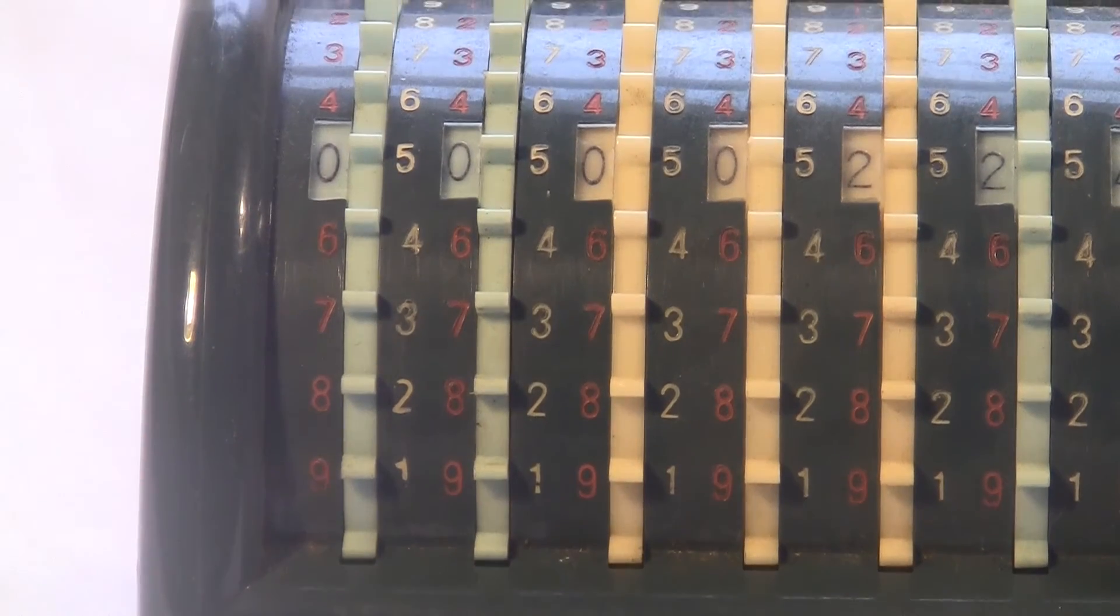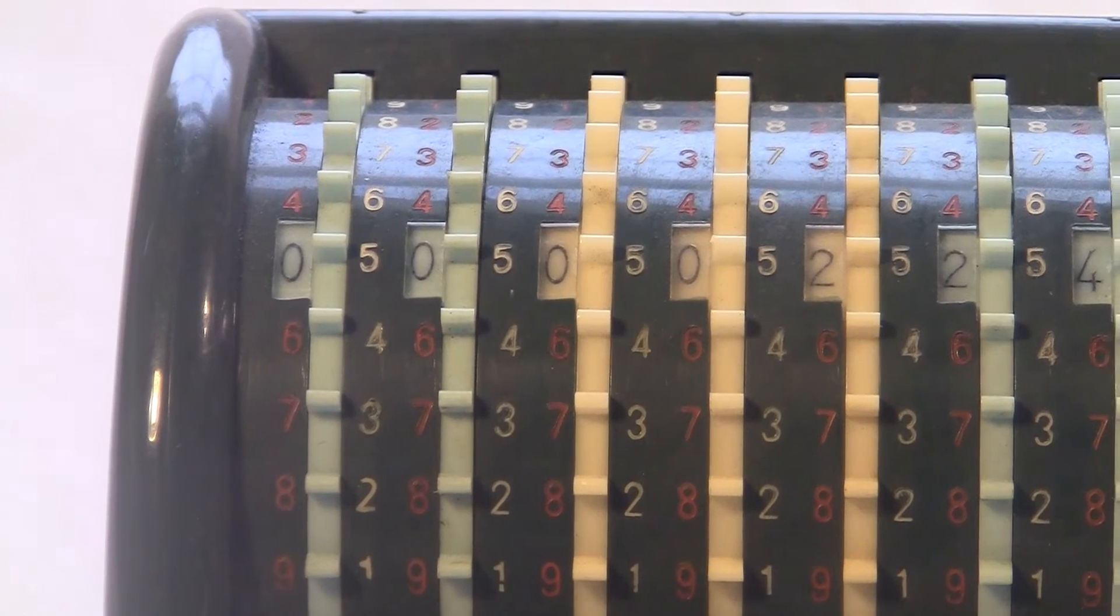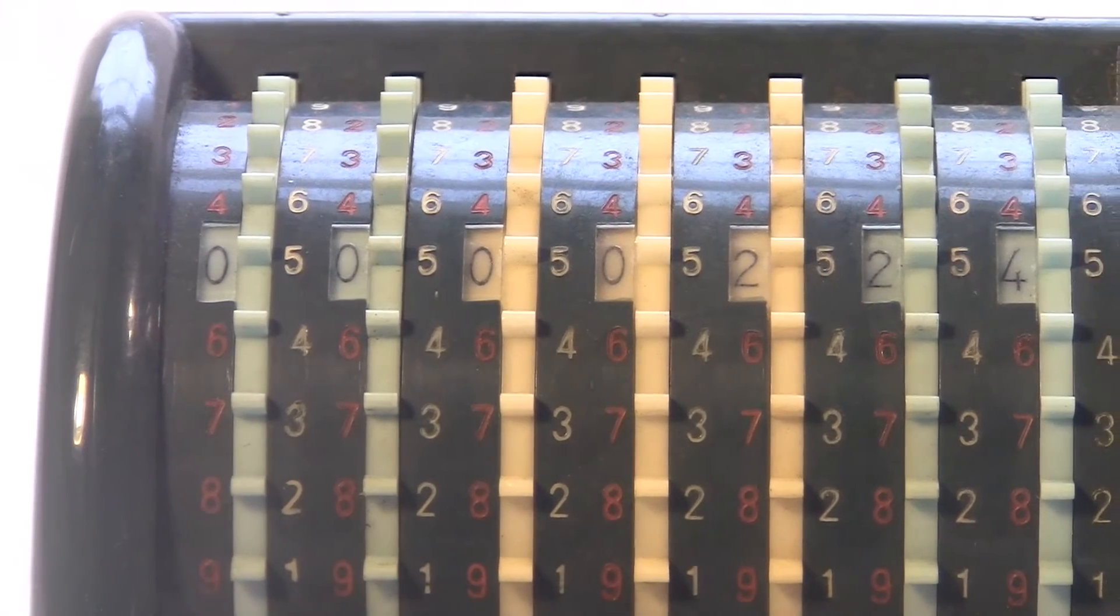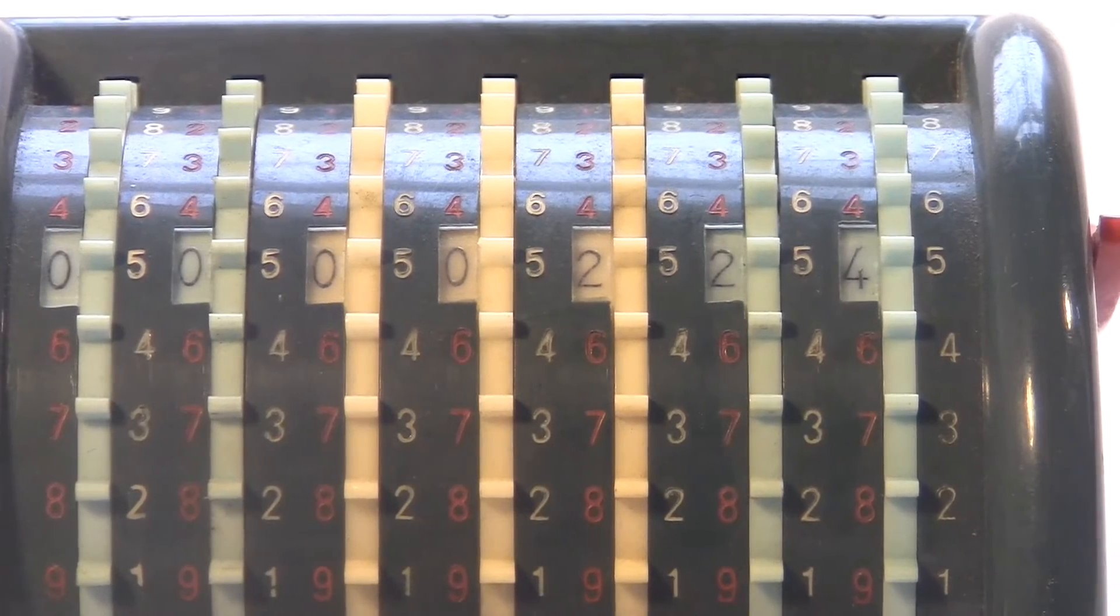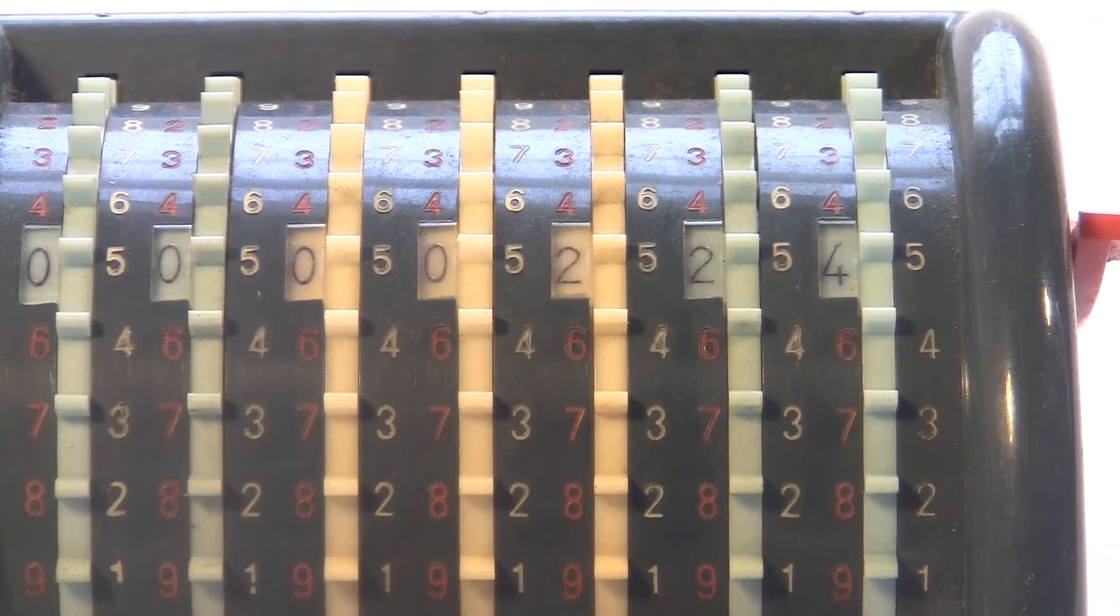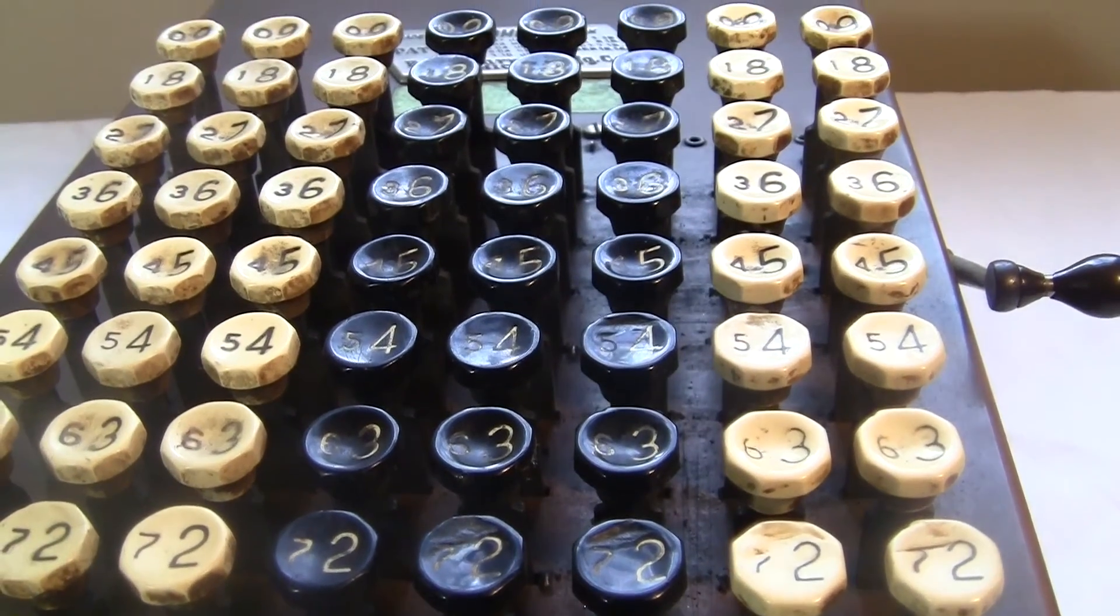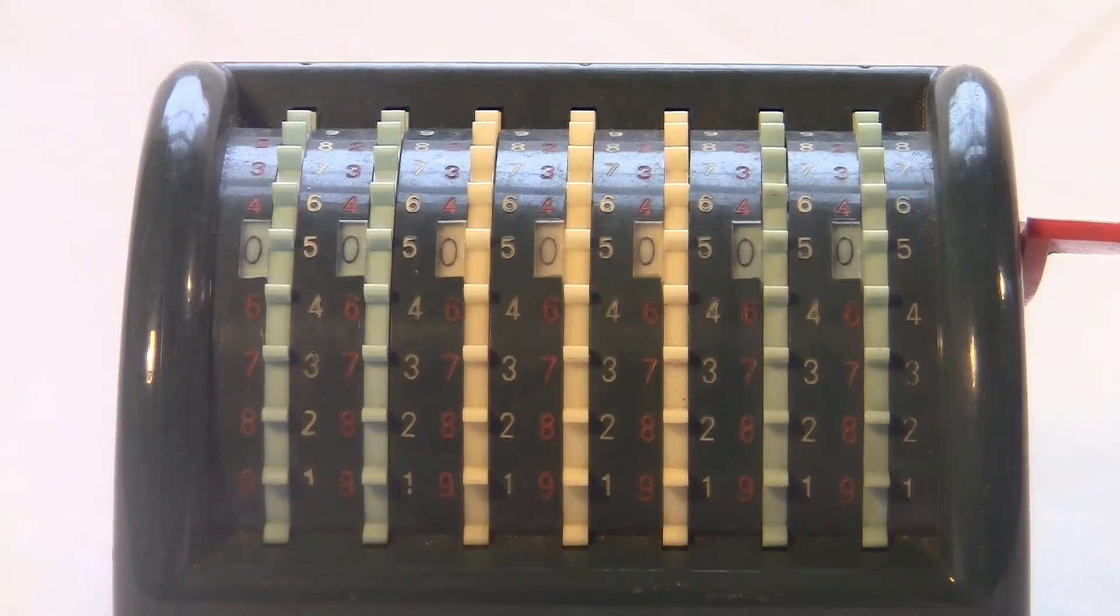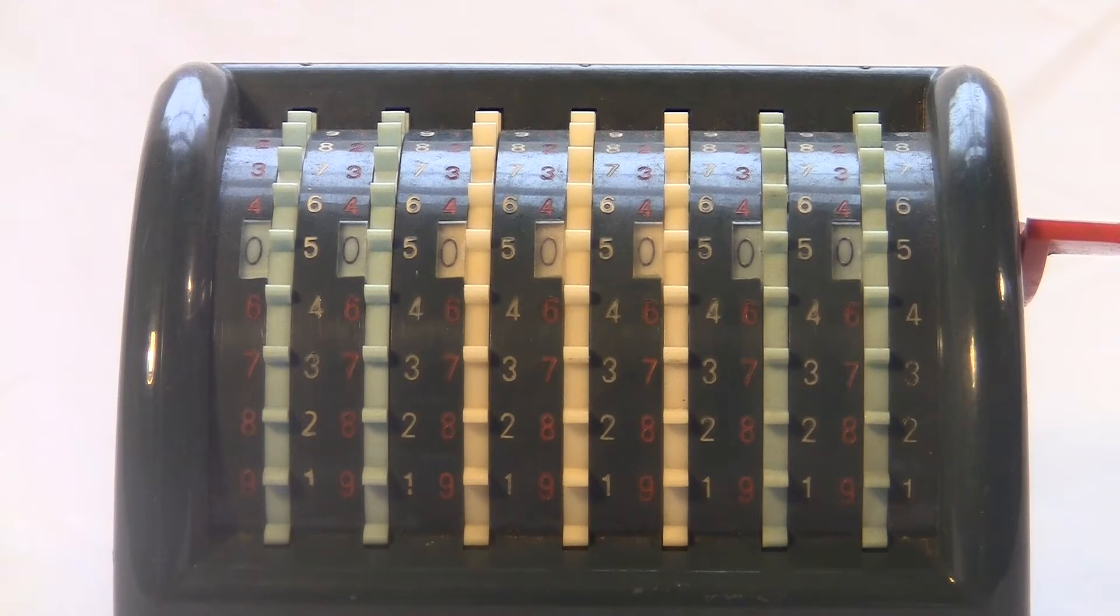The red numbers are for subtracting. Machines throughout the 20th century used what was called subtraction by complements. That means to subtract some number, you would add some other number and then either ignore or suppress an extra carry. Those machines use what's called the nines complement. That means the two numbers on each key always add up to nine. This device isn't like that. You can see these aren't nine complements.